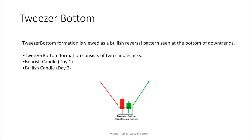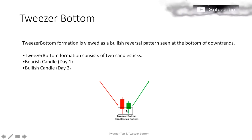Again, similar to the tweezers top, it is a two-candle pattern. The first day has a bearish candle and the second day has a bullish candle. The close of the first day candle is equal to the open of the second day candle. So the close of the first bearish candle equals the open of the second bullish candle, and they have almost equal lows.